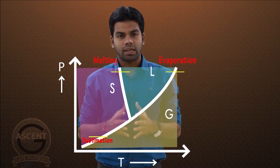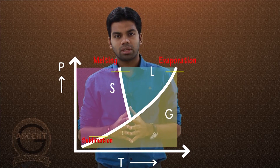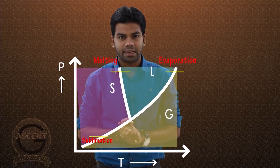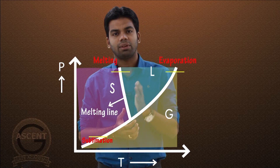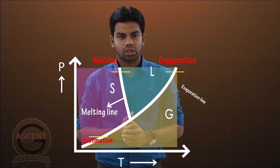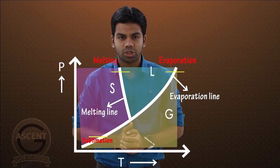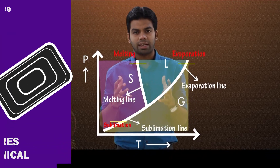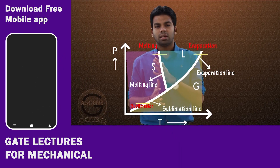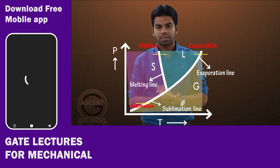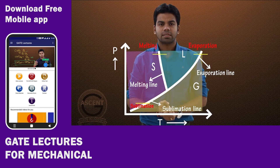The corresponding lines in this diagram are known as the melting line, the evaporation line, and the sublimation line respectively.